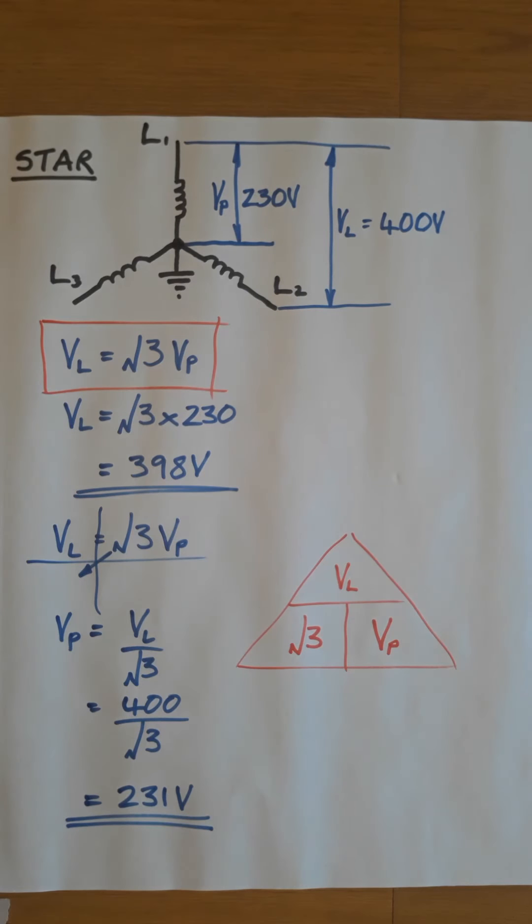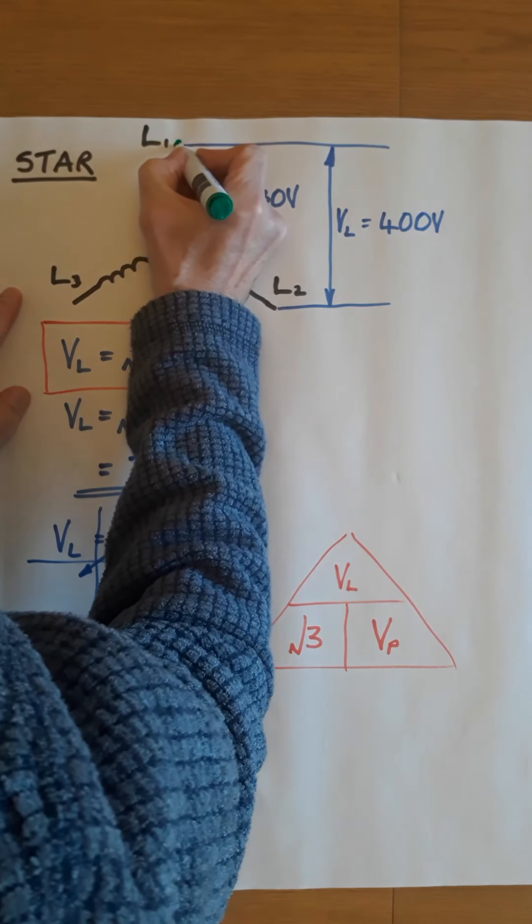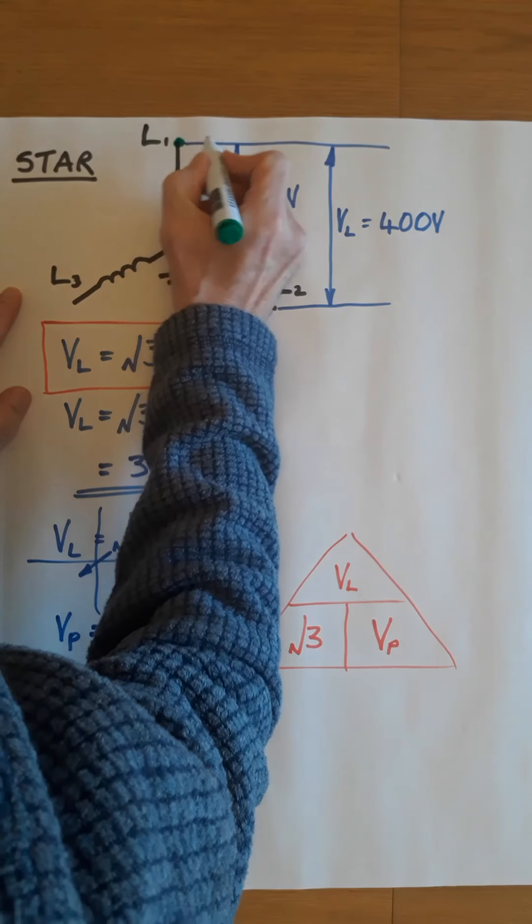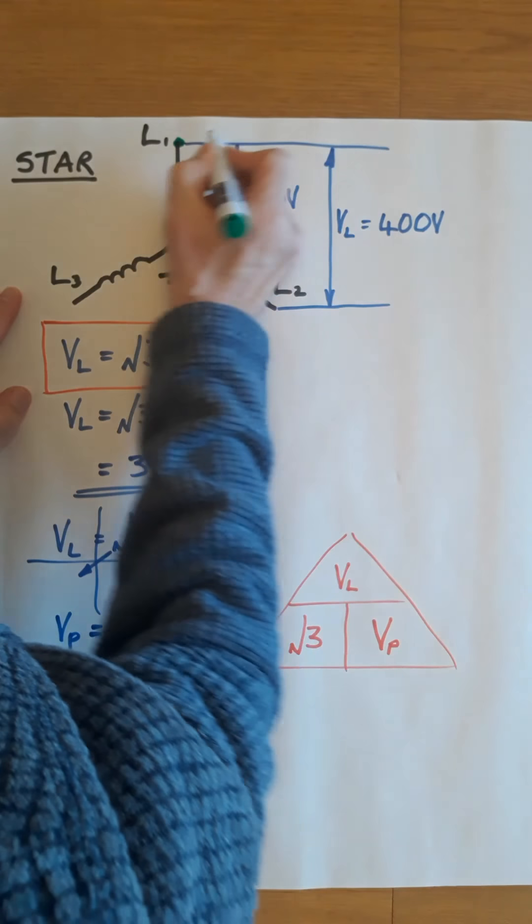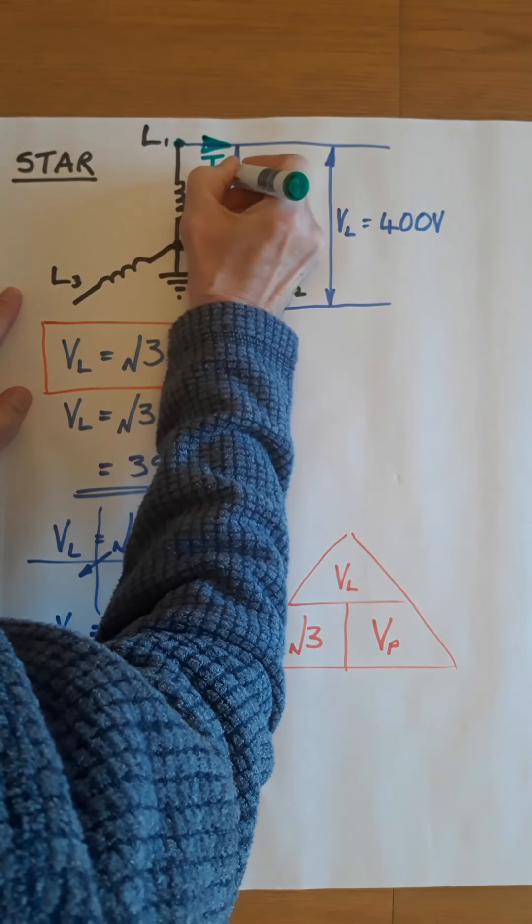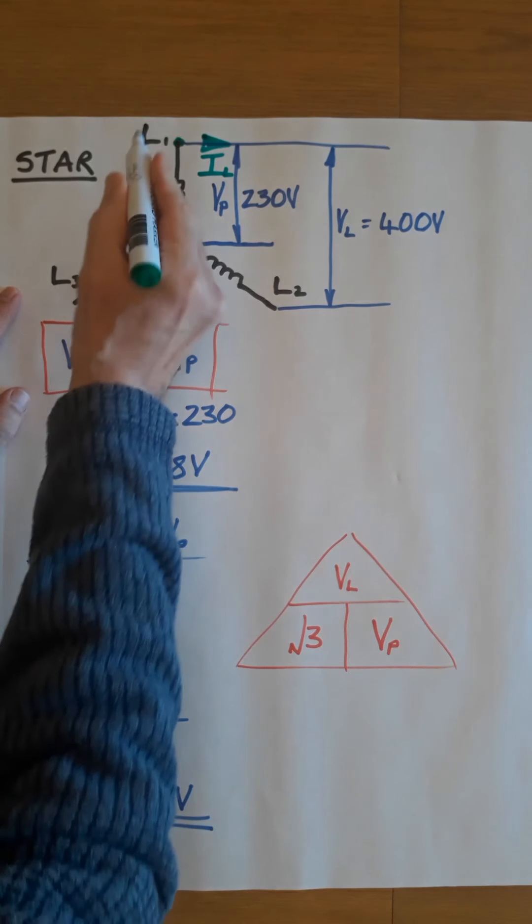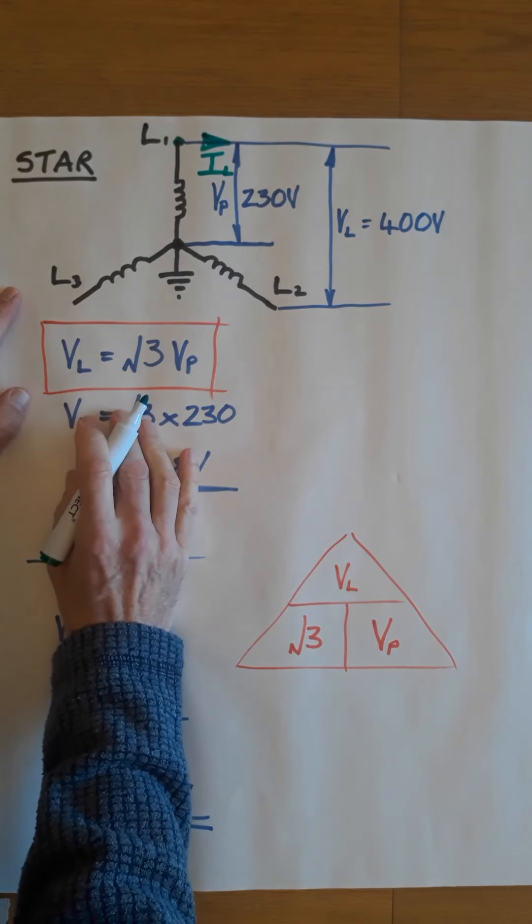So the last bit on this section is to deal with the currents in the circuit. The current that comes out of this line terminal, the current that goes that way into the circuit, is the line current. The current that comes out of any of the terminals L1, L2, L3 is a line current.